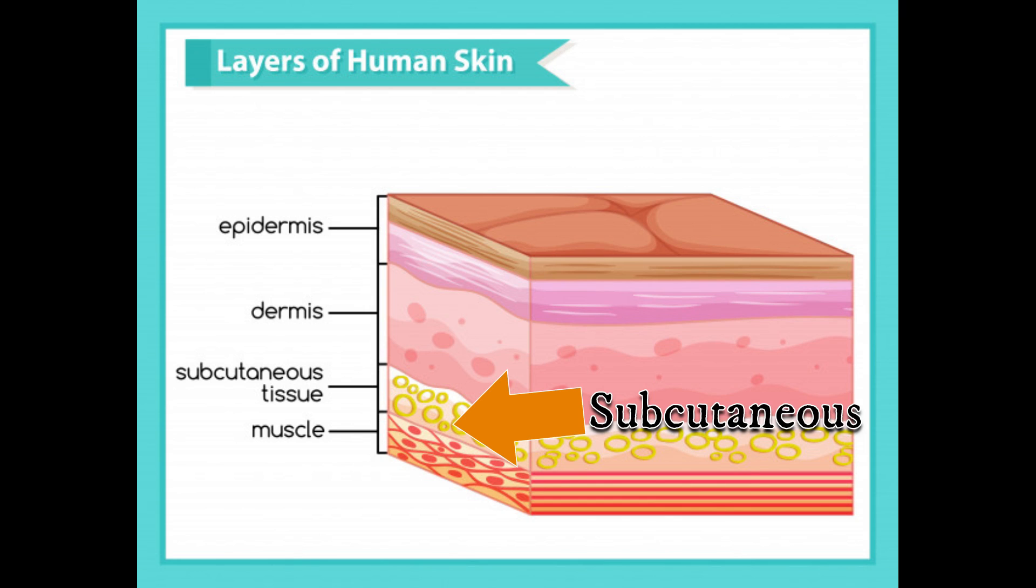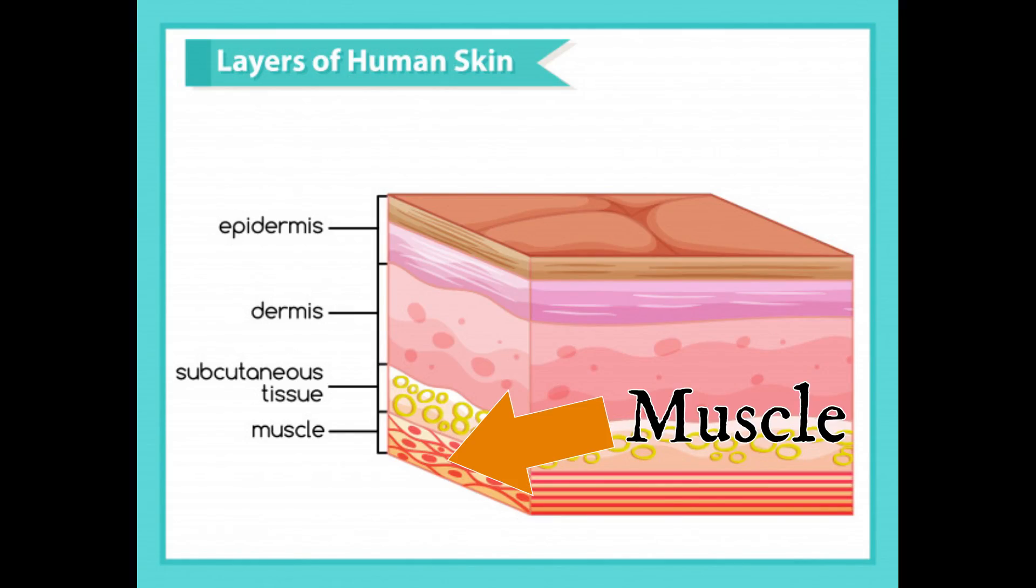Then we're going to have subcutaneous tissue. That's your fatty tissue. You're going to have some blood vessels in there and it's just generally really fatty. Not really a lot of substance to that layer and you can't really suture that layer very well because nothing will really take hold. And then you're going to have your muscle layer.